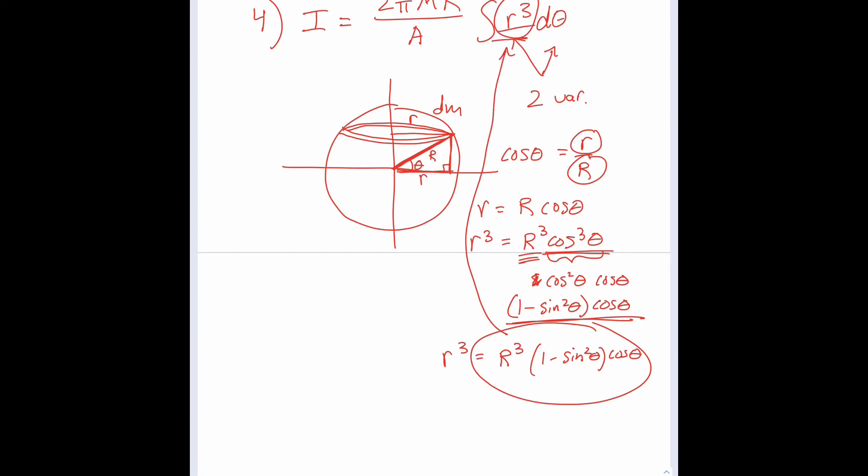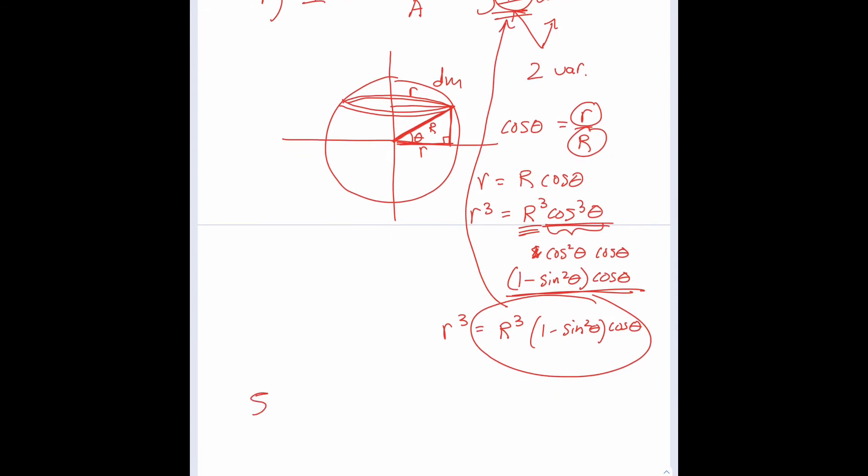So that gets us to step number five: I equals 2πMR over A. This A represents the surface area of the whole spherical shell, which is 4π capital R². And now we have the integral of capital R³, 1 minus sine²θ, cosine θ, dθ.